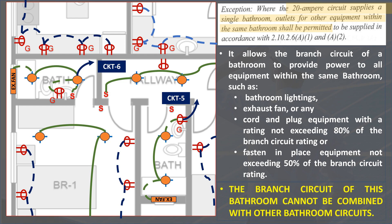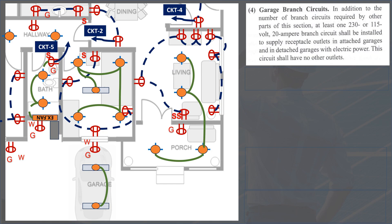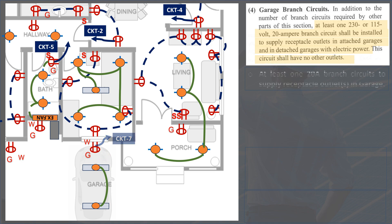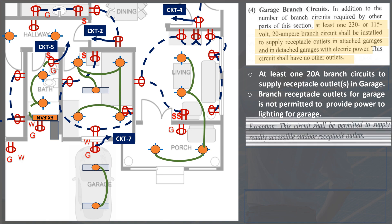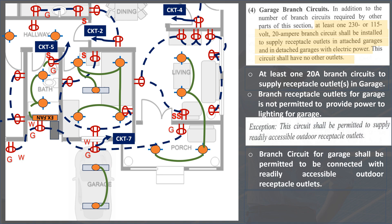The branch circuit of a bathroom cannot be combined with other bathroom circuits. Garage branch circuits: paragraph 4 of Section 2.10.1.11C states that in addition to the number of branch circuits required by other parts of this section, at least one 230V or 115V, 20A branch circuit shall be installed to supply receptacle outlets in attached garages and in detached garages with electric power. This circuit shall have no other outlets. However, per the exception, this branch circuit is permitted to provide power to readily accessible outdoor receptacle outlets. Readily accessible means being reached quickly without the use of a portable ladder.